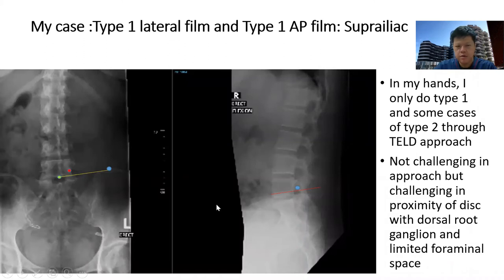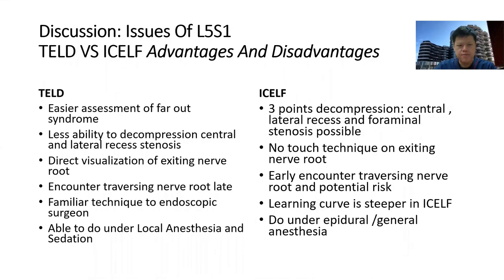In this case, we used a supra-iliac approach — a type 1 pelvis. I tend not to do trans-iliac approach, so I do not do type 3. For type 2, I also have a low threshold for doing the interlaminar approach. For the transforaminal approach, LA can be given with sedation, it is easier for far-out syndrome and extraforaminal disc, but there is less ability to decompress central and lateral recess stenosis in my opinion. There is early direct visualization of the exiting nerve root with later encounter of the traversing nerve root. This is a technique that many endoscopic surgeons are familiar with.